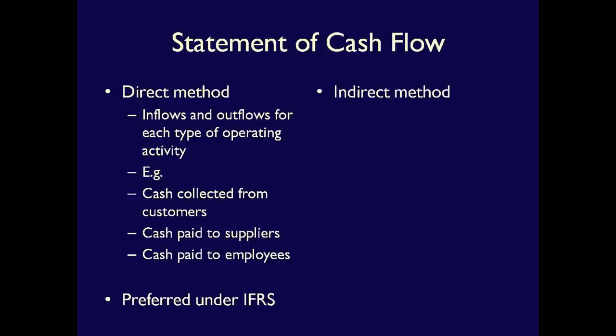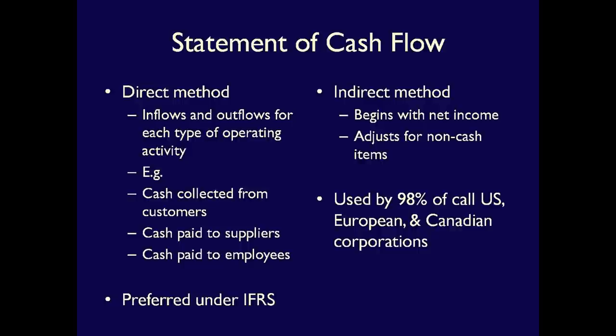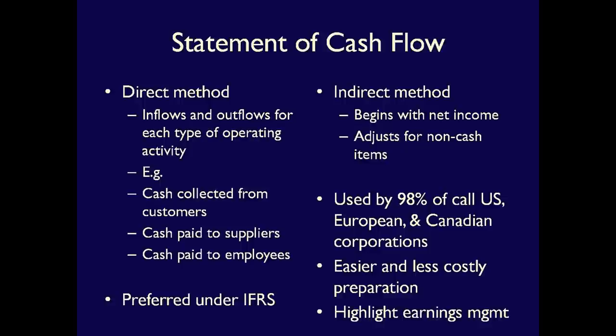The Indirect method focuses on the differences between net income under accrual accounting and cash from operations under cash accounting. It starts with net income and adjusts for non-cash items. The Direct method is more difficult for users to understand, but it does not stop approximately 98% of all US, European, and Canadian companies from using the Indirect method to calculate cash flows from operating activities. Because it is easier and less costly to prepare. One benefit for users of the Indirect method is that it highlights earnings management. We will further explore this concept when we cover the development of the cash flow statements in a later video.